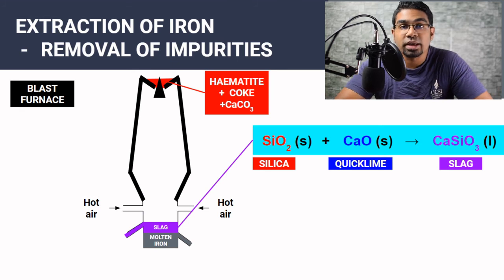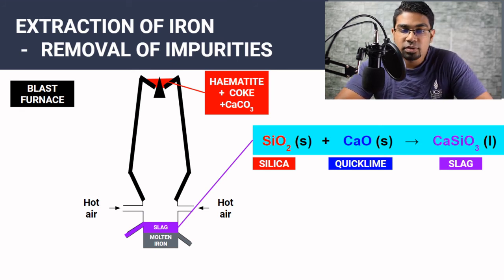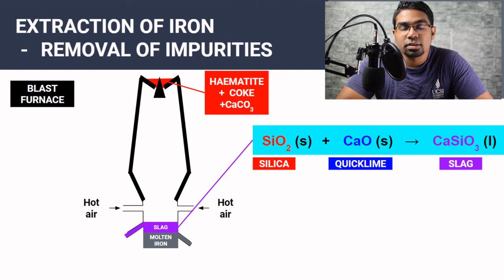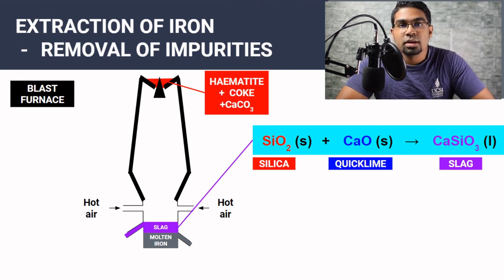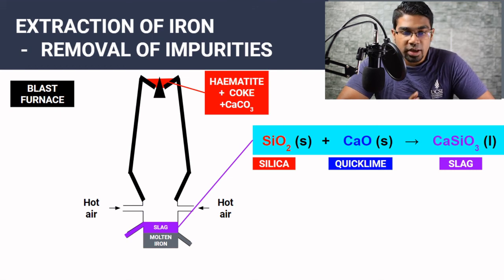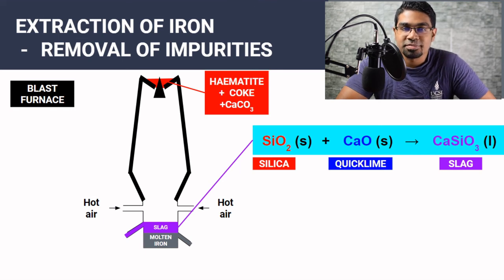This is how we end up from the iron ore all the way to iron. The iron obtained is not 100% pure — it will contain some carbon as well. This is the extraction process of iron from hematite; the same process is used for magnetite using a blast furnace. Since iron's position is lower than carbon in the reactivity series of metals, we are able to use carbon as the reducing agent.